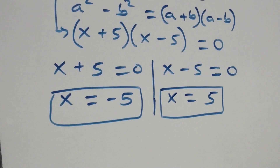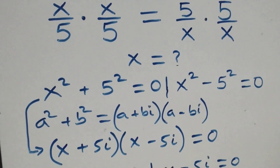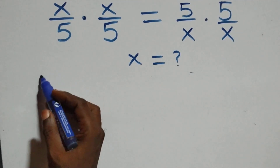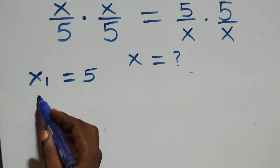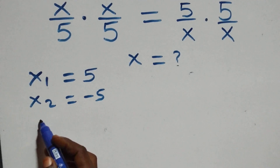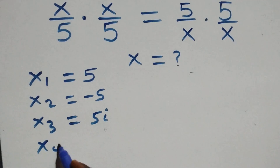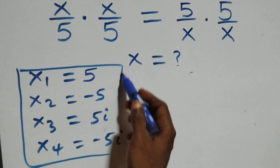All together, we have four solutions to this problem. Writing them out: x₁ equals 5, x₂ equals −5 — these are the two real solutions — and for the complex solutions, x₃ equals 5i and x₄ equals −5i. So we have 4 solutions altogether: 2 real and 2 complex solutions.